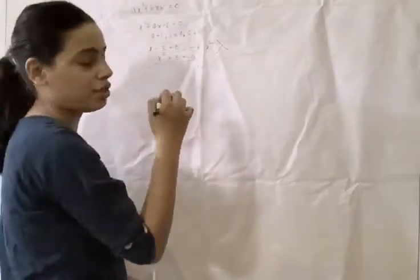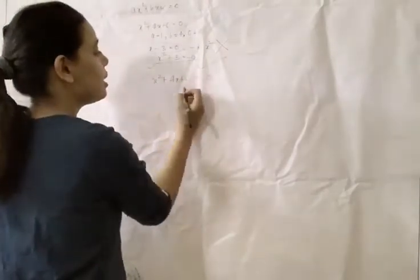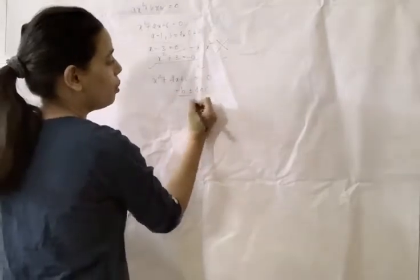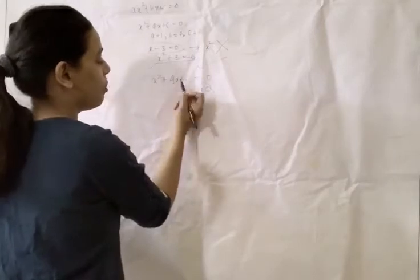To solve a quadratic equation, we have two formulas. First is minus B plus minus 4AC upon 2A. And second, we will split the middle term.